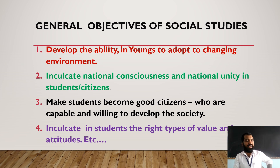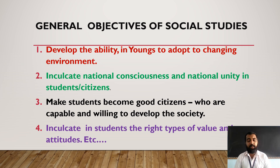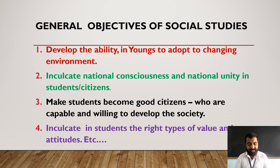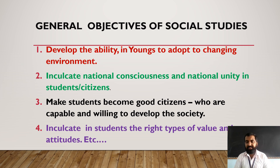In our eighth class Social Science, in the first semester, we have a total of nine chapters. The first chapter is the arrival of Europeans in India. The second chapter is what is around us. The third chapter is the Indian Constitution. The fourth chapter is how the traders became rulers. The fifth chapter is natural disasters. The sixth chapter is the effect of British rule in India. The seventh chapter is environmental changes. The eighth chapter is the role of parliament in a democratic country. Lastly, the freedom movement of 1857. These are the History, Geography, and Civics chapters included in eighth class Social Science. Thank you. Have a great day.